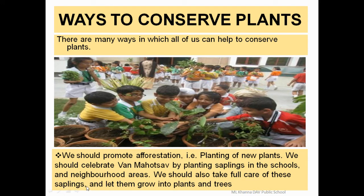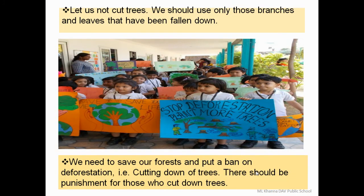We must take full care of saplings and let them grow into plants and trees. We should not cut trees — we should use only branches and leaves that have fallen down for making compost or as fuel to cook food. We need to save our forests and put a ban on deforestation, and there should be punishment for those who cut down trees. Look at this rally of small kids giving a message to society: we have to stop deforestation and plant more trees.